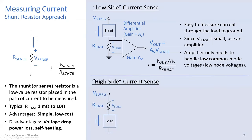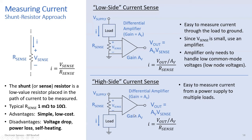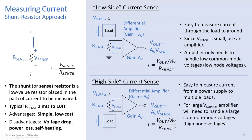High-side current sensing is when you put the resistor above the load, measuring V_sense at the supply side. This makes it easy to measure current from a power supply to multiple loads. You put an amplifier there with gain A_v, so the output voltage is A_v times V_sense and you calculate the current as V_out divided by A_v divided by R_sense. For a large supply voltage — say 30 volts — that amplifier would have to handle a 30-volt common-mode voltage even though V_sense between the two inputs is really small.